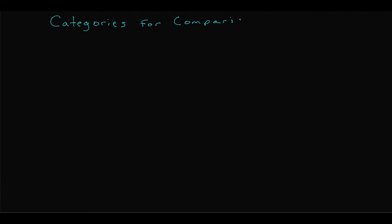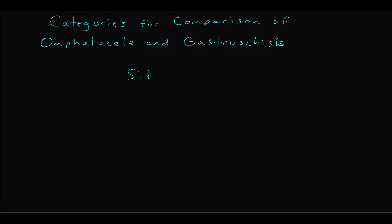Let's take a look at each of these conditions in more detail. Here are some important categories that will help differentiate these entities: site — where is the defect relative to the umbilicus? Sac — are the contents of the resultant defect covered by an amniotic membrane? And contents — which organs, midgut and/or viscera, are in the defect?